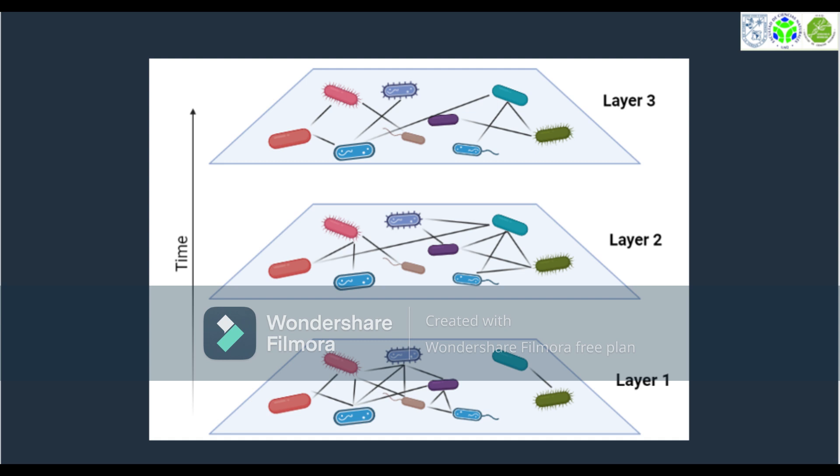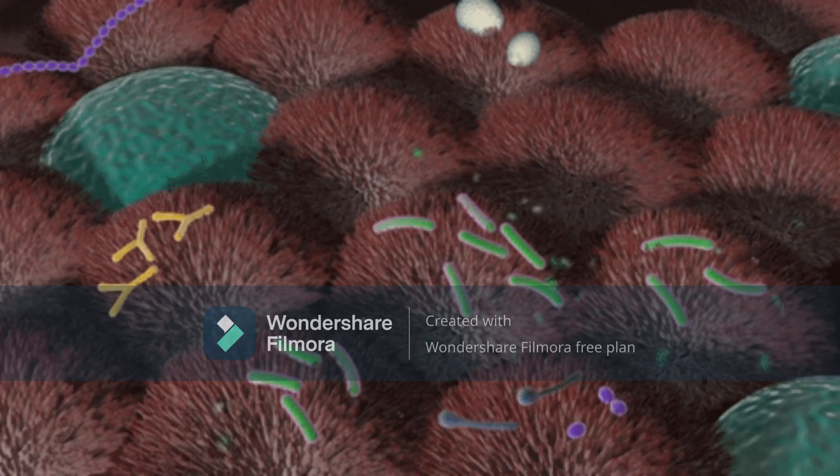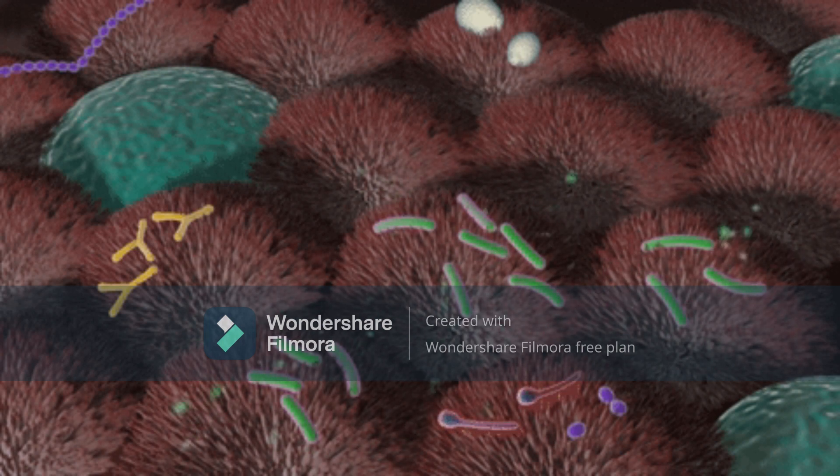The microbiota of the digestive tract is an example of a dynamic system because the bacterial communities are constantly exposed to a variable environment that alters how the bacteria relate to each other and the host's tissues.